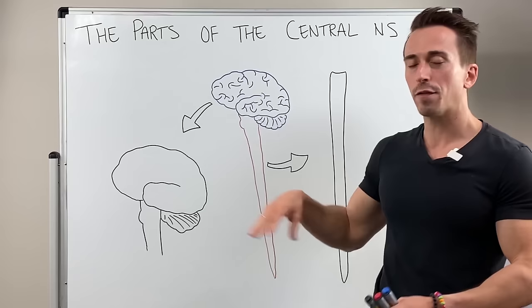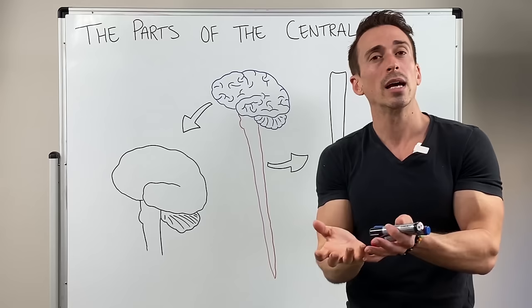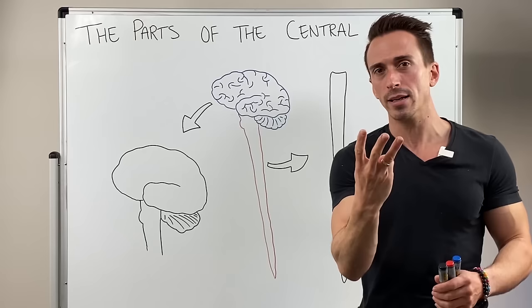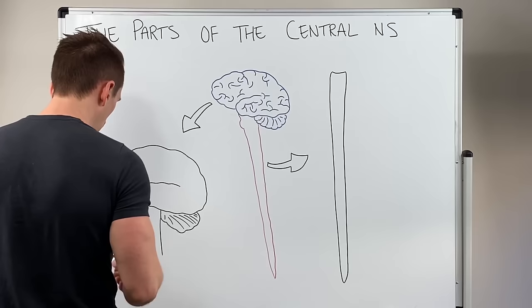Now if we look at the brain itself, first thing I want to begin with is the fact that the brain sits within a skull casing, that bony structure that we call the skull. But above the brain but below the skull, there's actually three protective layers of the brain that we term the meninges or meningeal layers.